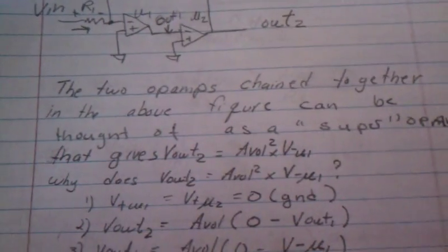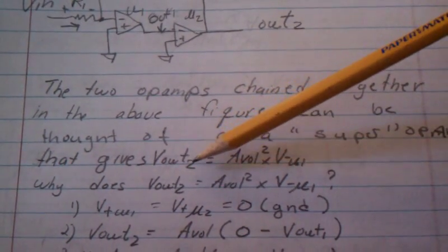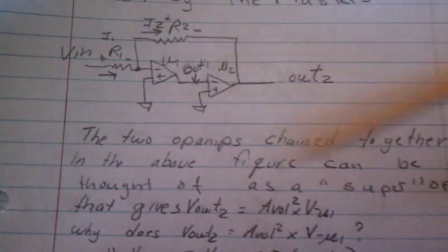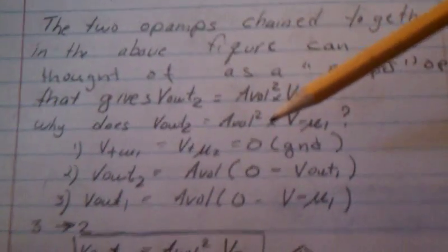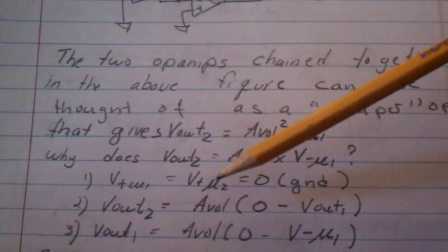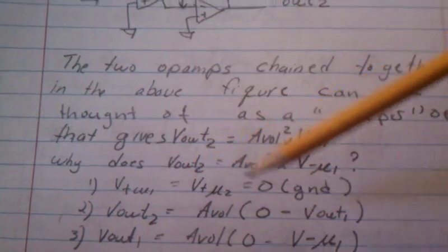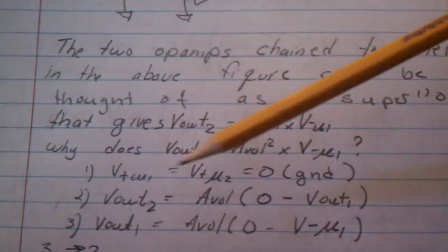Now why is this so? Well, first we have V_out squared equals the open loop gain squared times V_minus. That's the ultimate thing that we were looking for, but how do we get there? We've got three equations: V_plus at U2 and V_plus at U1 equals zero, that's fairly typical of our derivations.